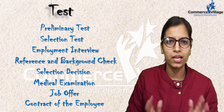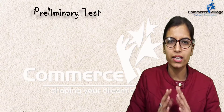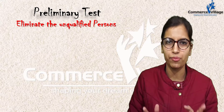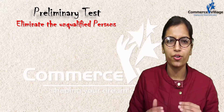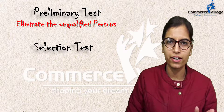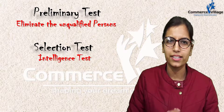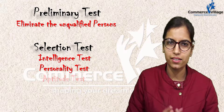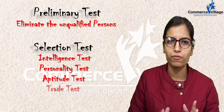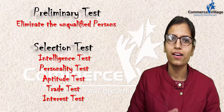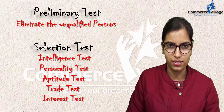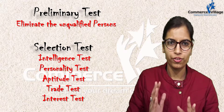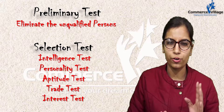Number one, preliminary test, is used to eliminate unqualified persons — but Mr. Murthy is not talking about elimination. So we move to number two, selection test. There are five tests under this: number one is intelligence test, number two personality test, number three aptitude test, number four trade test, and number five interest test. Since he is talking about the selection process, we will decide which of these five tests he needs.